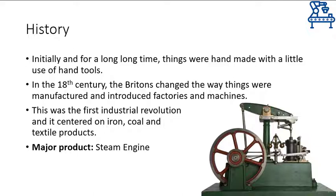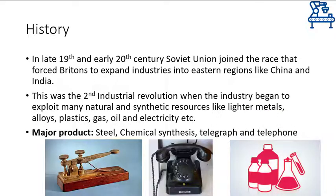Cutting things short, the true industry from which our modern day industry has been derived was established in the 18th century by Britons. They effectively used the steam engine to change manufacturing from handmade to machine-made for the first time in history. This era is known as the first industrial revolution. At that time, industrial products were mostly centred around naturally occurring things — for example, iron, coal, and textile. The Britons tried to contain the technology to themselves, but ideas like these cannot be confined to any region. Therefore, soon industries began to form in other parts of Europe as well.